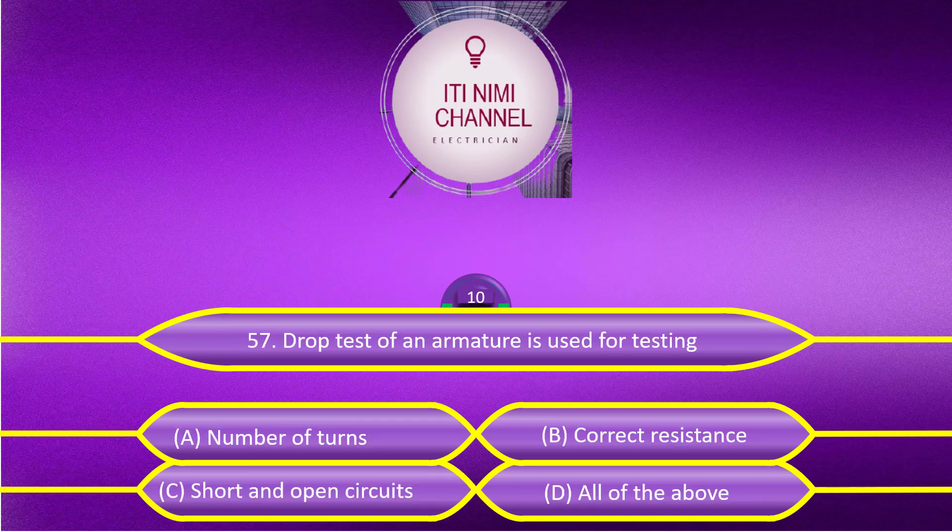Drop test of an armature is used for testing: Option A, number of turns. Option B, correct resistance. Option C, short and open circuits. Option D, all of the above.